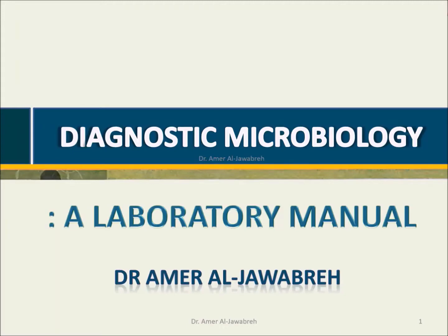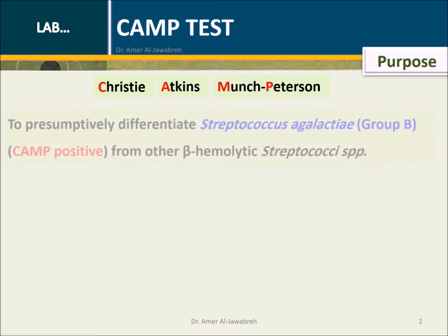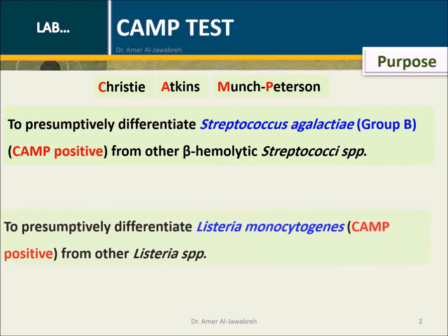Diagnostic Microbiology, a Laboratory Manual. CAMP Test — Christy Atkins-Monk-Peterson. Purpose: To presumptively differentiate Streptococcus agalactiae group B, CAMP positive, from other beta-hemolytic streptococci species. To presumptively differentiate Listeria monocytogenes, CAMP positive, from other Listeria species.